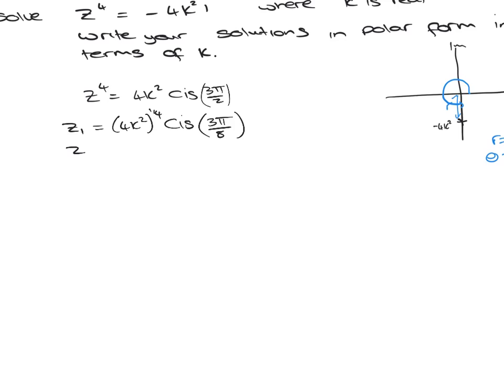We could simplify that up a bit, so if we square root, the 4th root is square root and square again. If we square root 4k squared, we're going to get 2k. So this is going to end up being the square root of 2k, and cis 3 pi by 8.